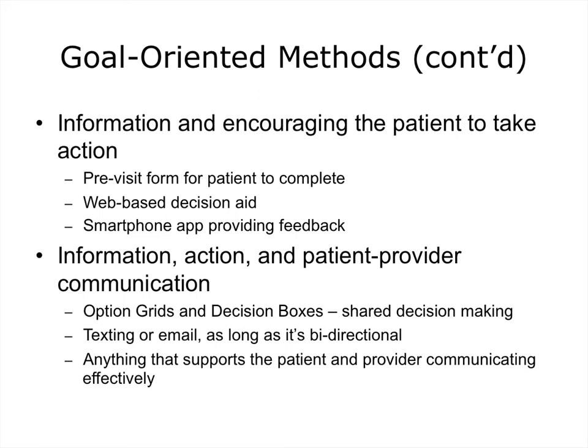The third goal-oriented method is where you provide the patient with information and want them to take action with the ultimate hope that it will improve patient-provider communication. This is perhaps the most difficult one. Options include option grids and decision boxes, which are specific tools that providers can use to engage in shared decision-making with patients. It could be texting or email, as long as it is bi-directional. These goal-oriented methods are for patients as well as the patient's significant others — friends, families, and others involved in caring for that patient.